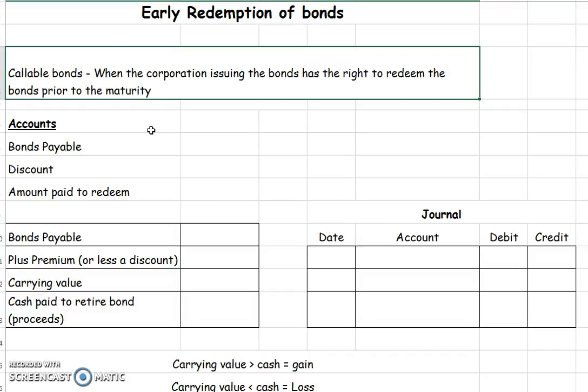So if our interest rate drops and we don't want to pay the higher interest rate of our bonds, we may choose to pay them back early. Or if we just have extra cash and we don't want to incur that interest expense any longer, we may call them early.